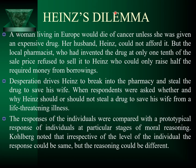Next is the Heinz Dilemma. This is actually a situation: a woman living in Europe would die of cancer unless she was given an expensive drug. Her husband Heinz could not afford it, but the local pharmacist who had invented the drug at only one-tenth of the sale price refused to sell it to Heinz, who could only raise half the required money from borrowings. Desperation drives Heinz to break into the pharmacy and steal the drug to save his wife — that was his priority.